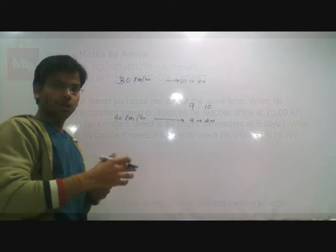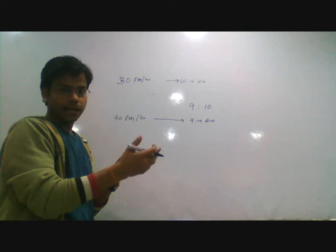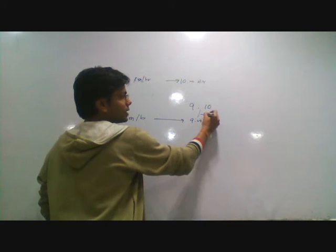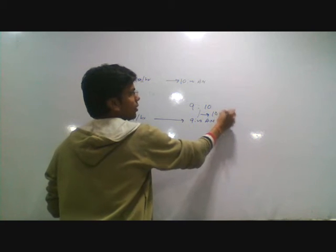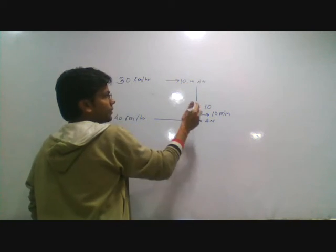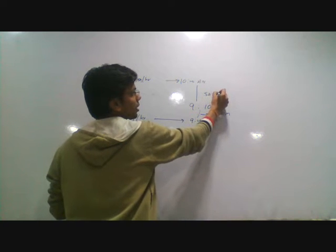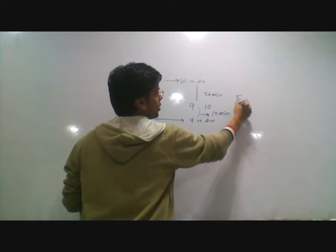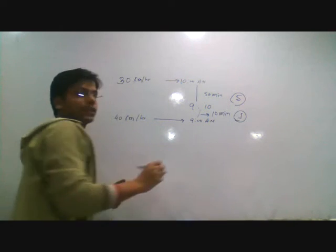We do not solve this by making equation, we can. Now, find the gap between 9 and 9:10 is nothing but 10 minutes. We just find the gap on the given speed system, 50 minutes, and the ratio of 50 and 10 is nothing but 5 is to 1. So these two are my gap ratio.